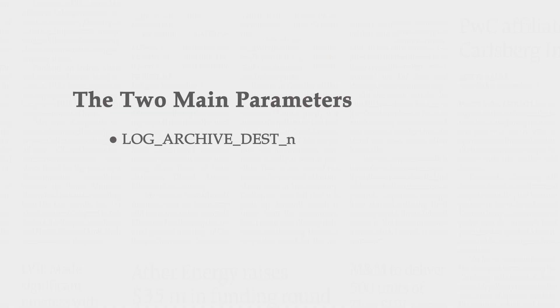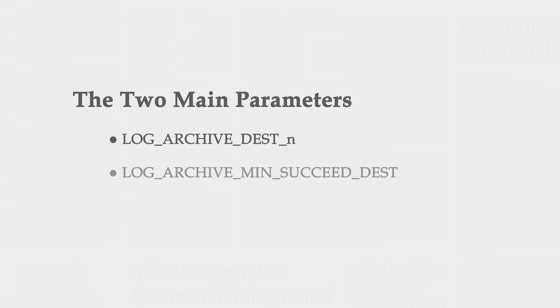There are two main parameters that we need to configure to set archive log destination directory. These are LOG_ARCHIVE_DEST_N and LOG_ARCHIVE_MIN_SUCCEED_DEST.